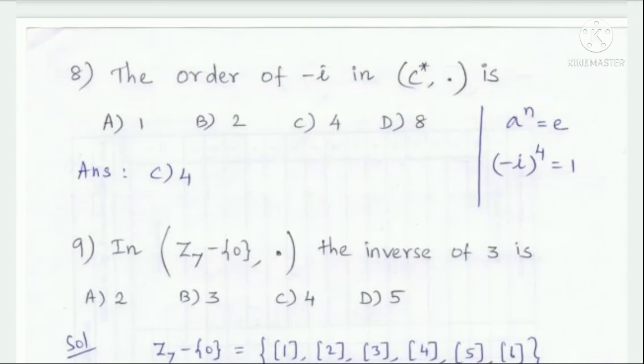The order of minus i in the complex numbers under multiplication. The general formula: a to the power n equals e, where n is the least positive integer. For minus i, multiplying 4 times gives 1. So the order is 4.